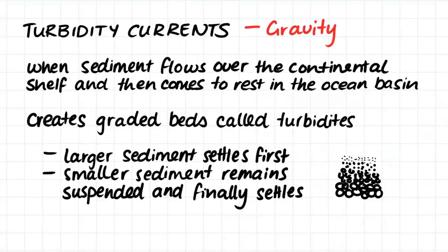Turbidity currents occur when sediment avalanches over the edge of a continental shelf and then comes to rest in the ocean basin. This occurs because of the action of gravity and this is how gravity transports sediment.